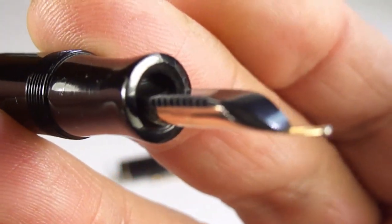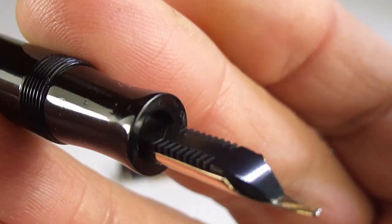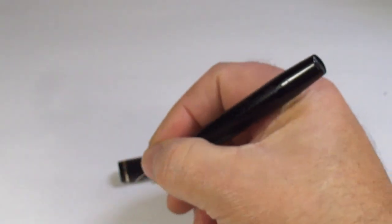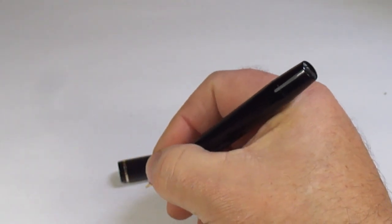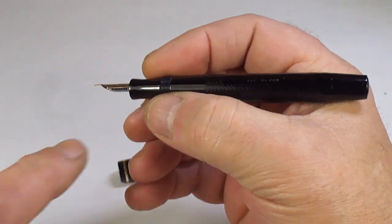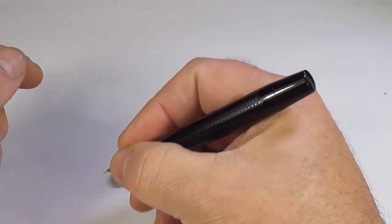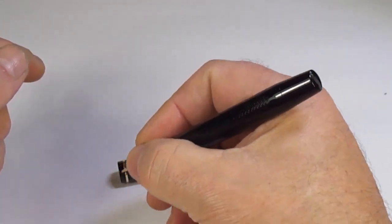There's the feed underneath. It's got the standard ladder feed of that period. Everything is lovely and clean. Now, even with my large hands, it's a very comfortable pen to hold. It's got this concave section, which makes it nice and comfortable to write with.